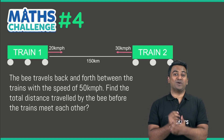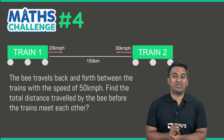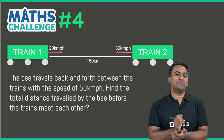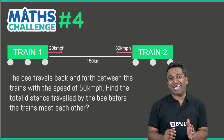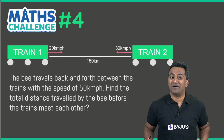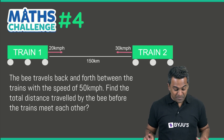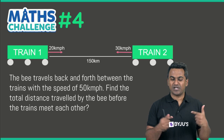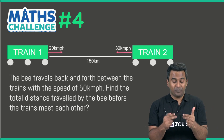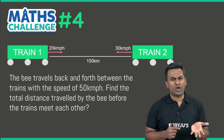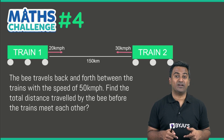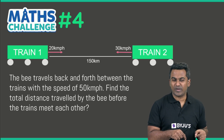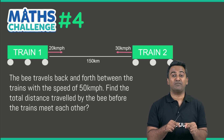Hello everybody and welcome to Math Challenge number four. This amazing problem is also called the Flight of the Bumblebee. There are two trains traveling towards each other — the speed of one train is 20 kilometers per hour, the speed of the other is 30 kilometers per hour, and the distance between the two trains is 150 kilometers.